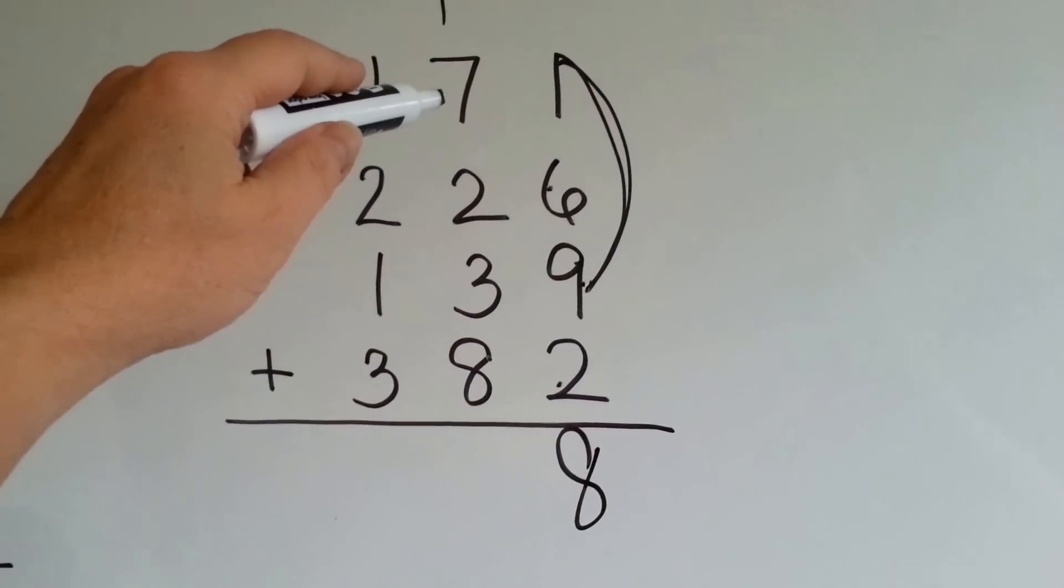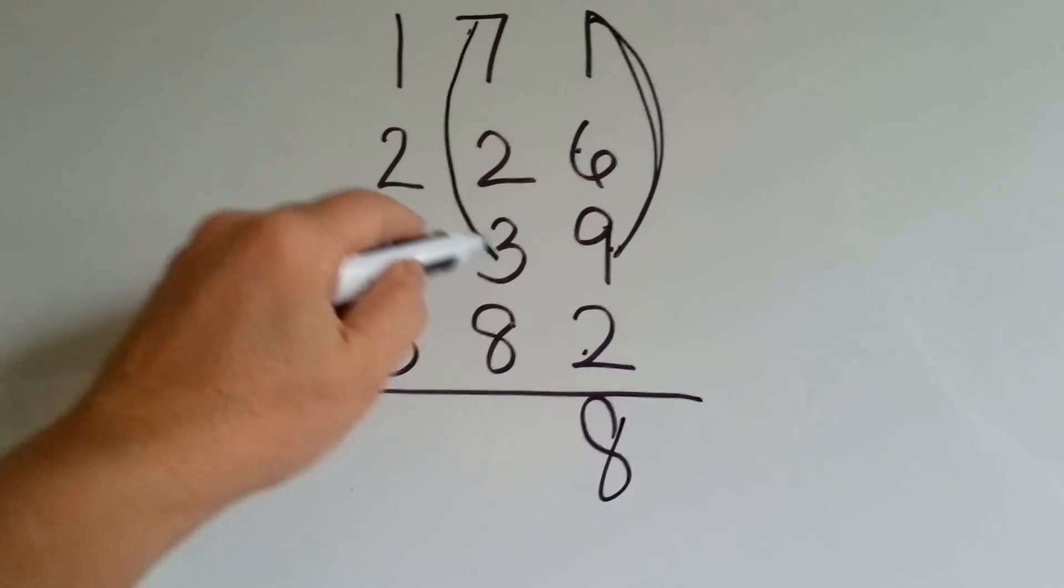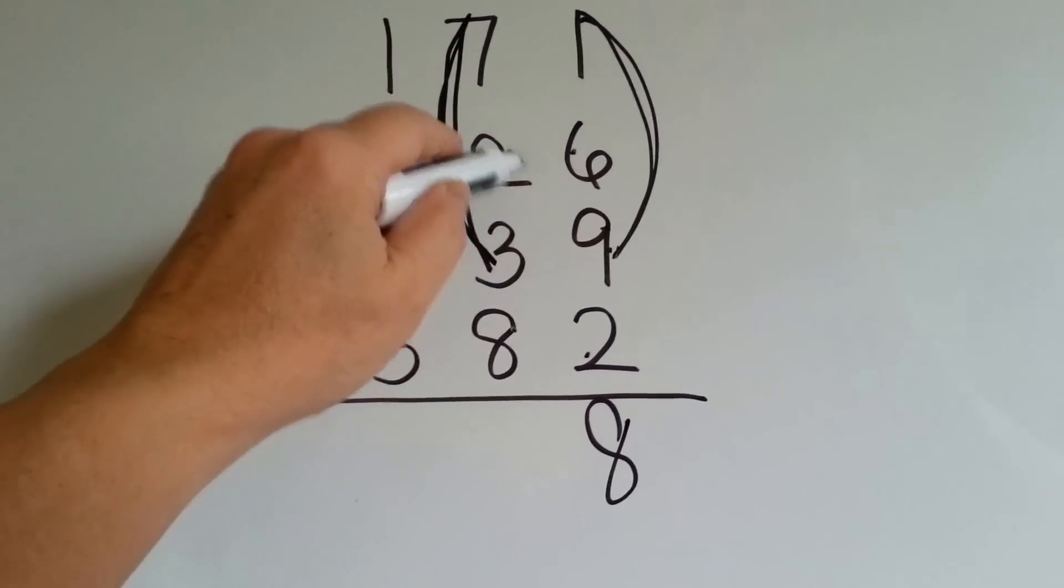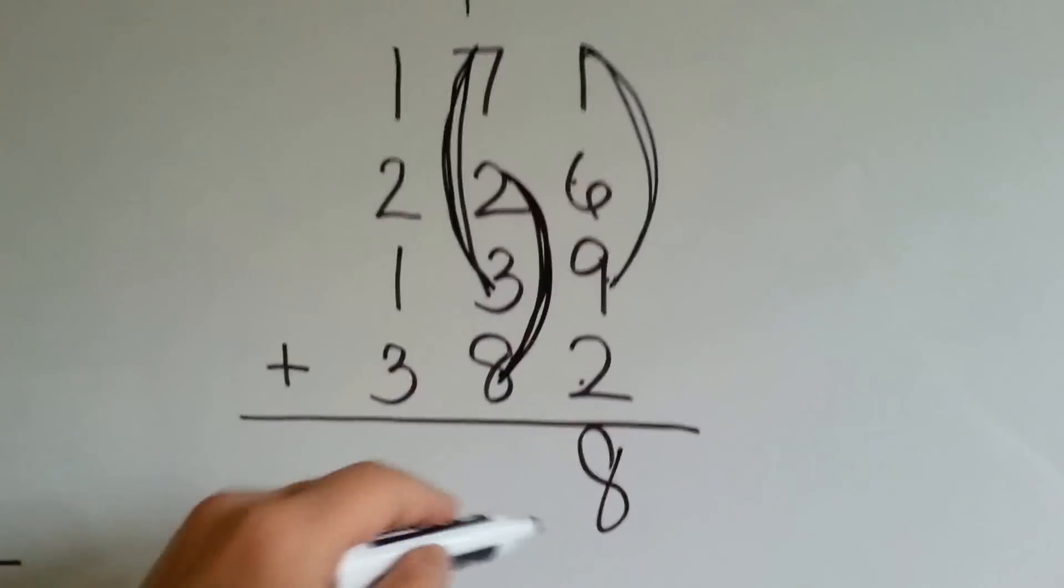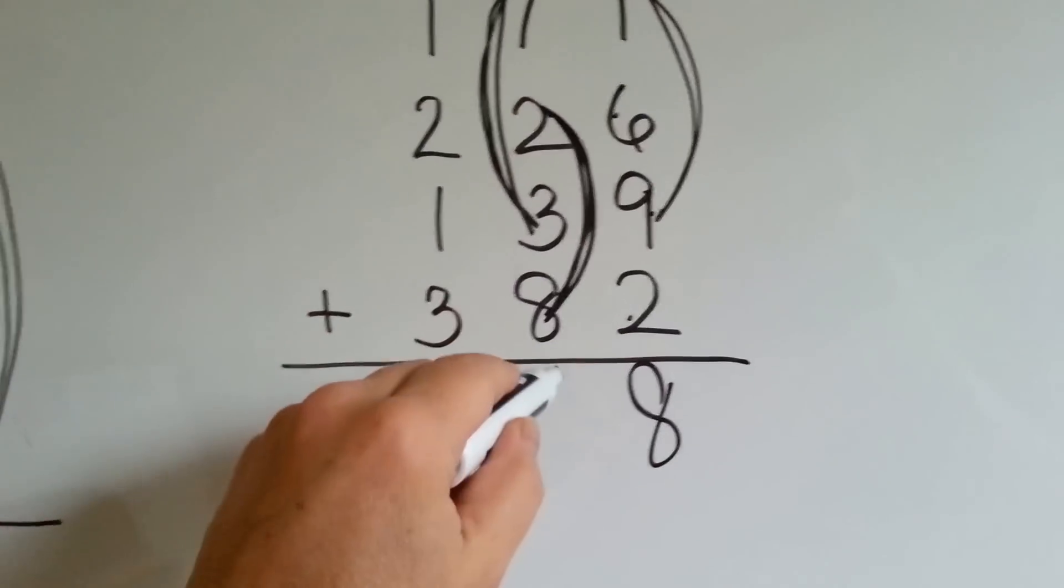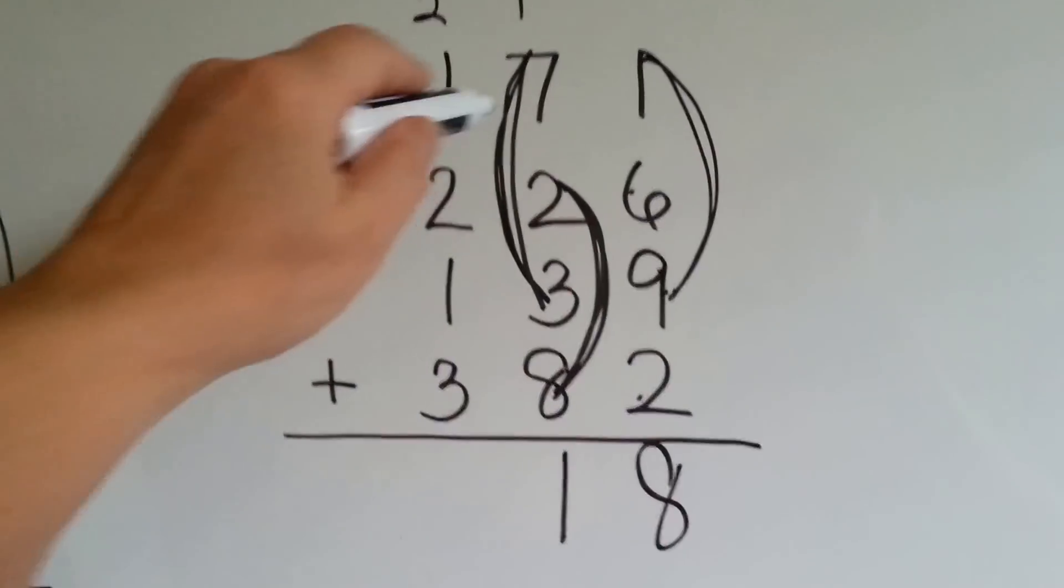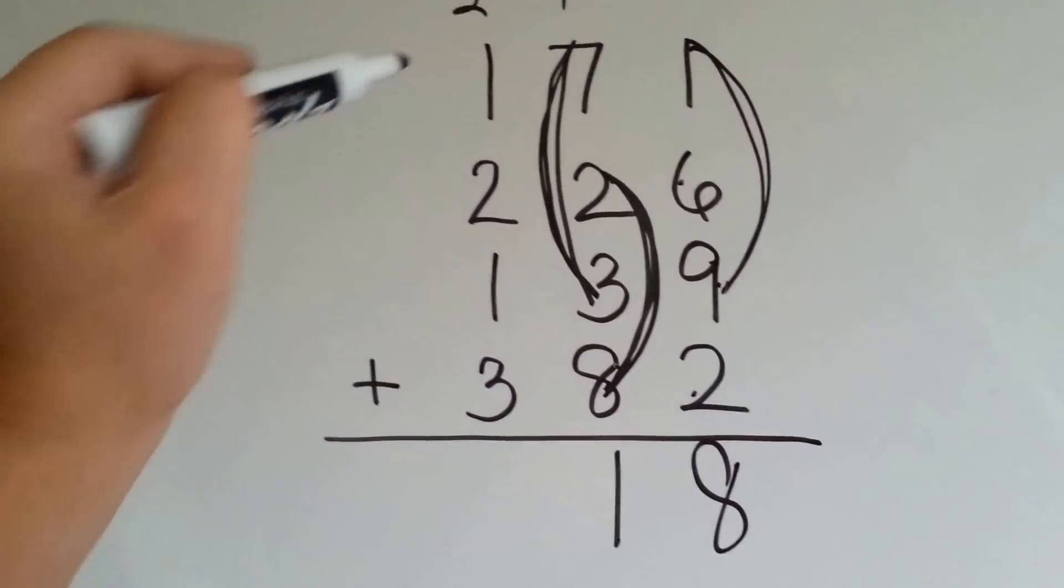Do you see some compatible numbers here? 7 and 3 makes 10, and 2 and 8 makes 10. 10 and 10 is 20. Then we can add the 1. Carry the 2. Put that down there because it's 21. 10, 20, and the 1 we carried over, 21.